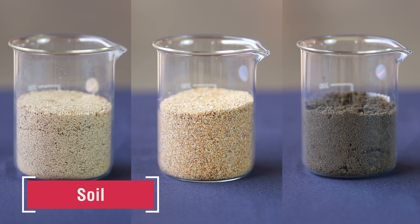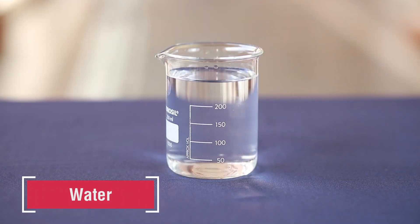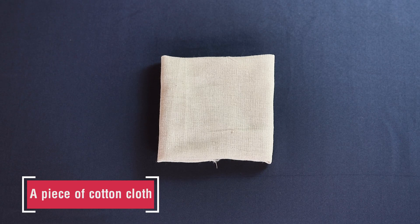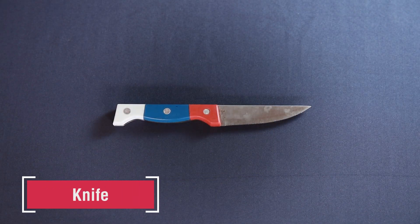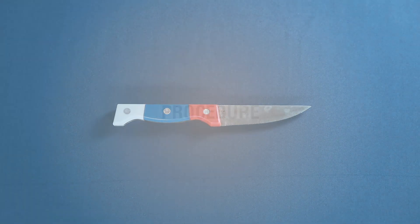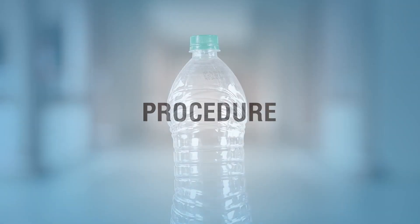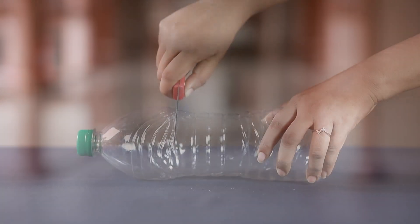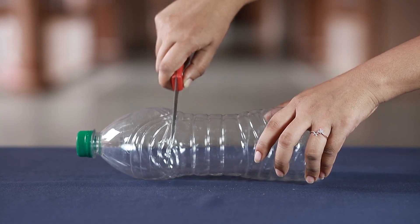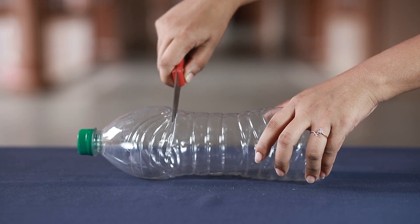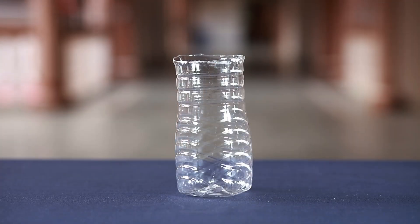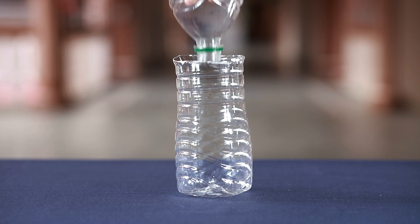Procedure: Take a clean used plastic bottle. Cut the bottle with a knife about 5 centimeters below the neck to divide it into two parts. Invert the upper part of the bottle and keep it over the lower part.